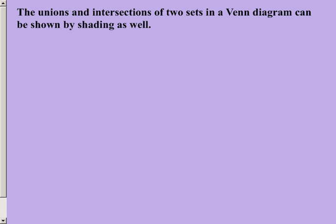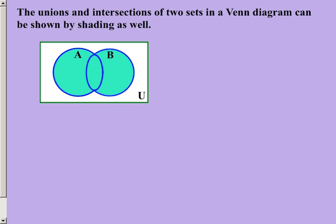Now unions and intersections are of particular interest when it comes down to Venn diagrams, and they can be demonstrated by shading within the Venn diagram as well. What we are looking at here is everything within set A is shaded, but also everything within set B is shaded. This is a graphic example of the union between set A and set B.